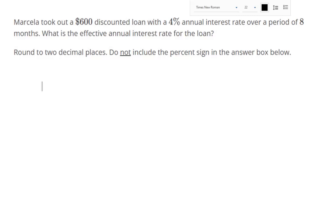So, a discounted loan means they've already taken the interest out of the money we're supposed to receive. We took out a $600 loan, but we're going to get less than $600 because they already took the interest that we owe them out.